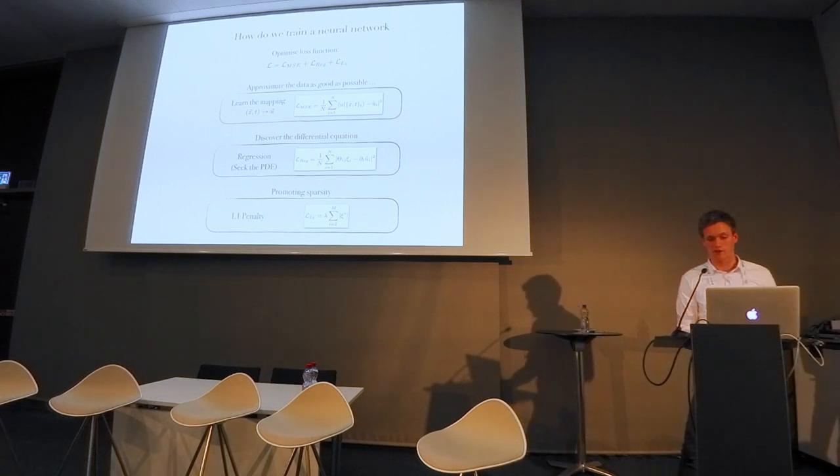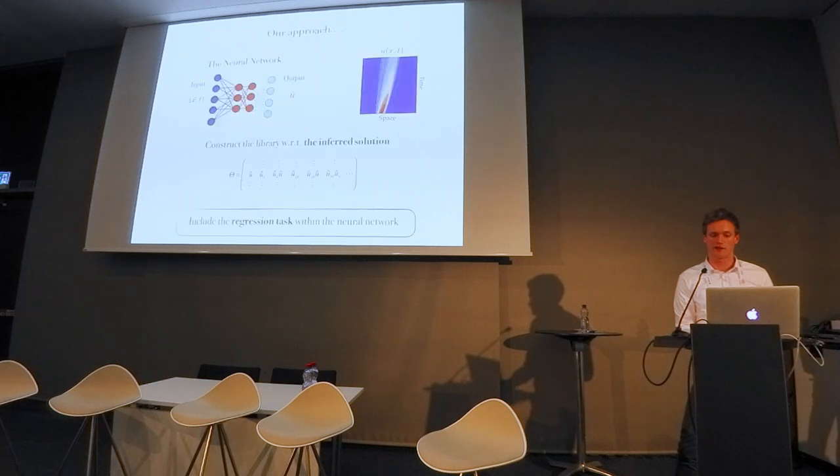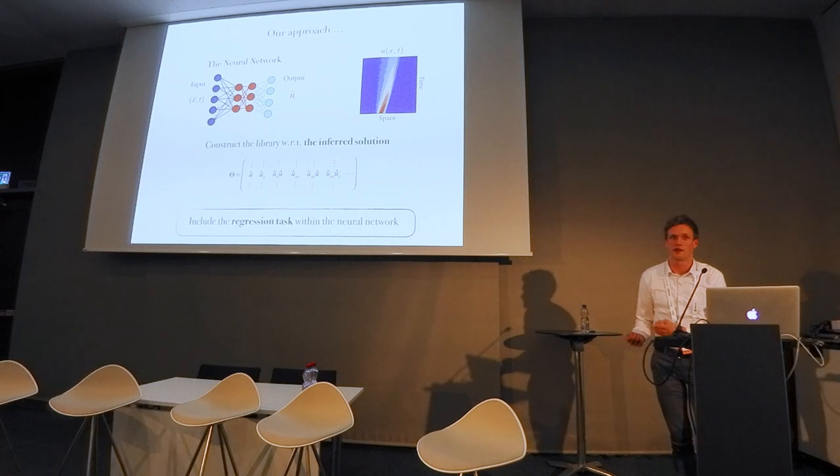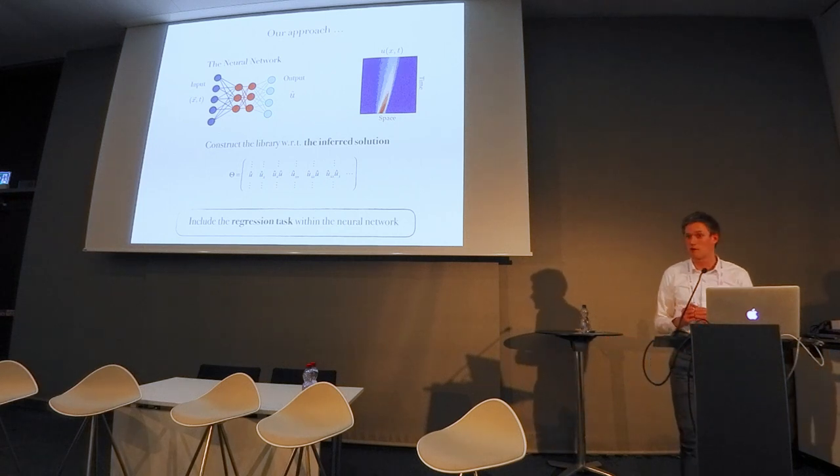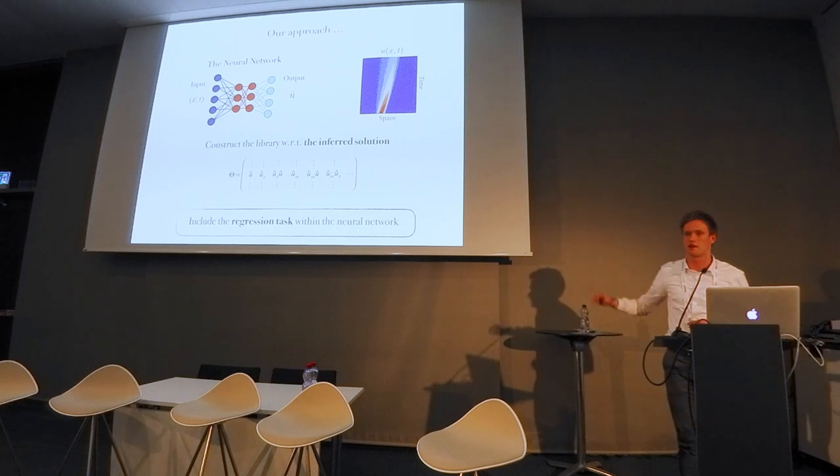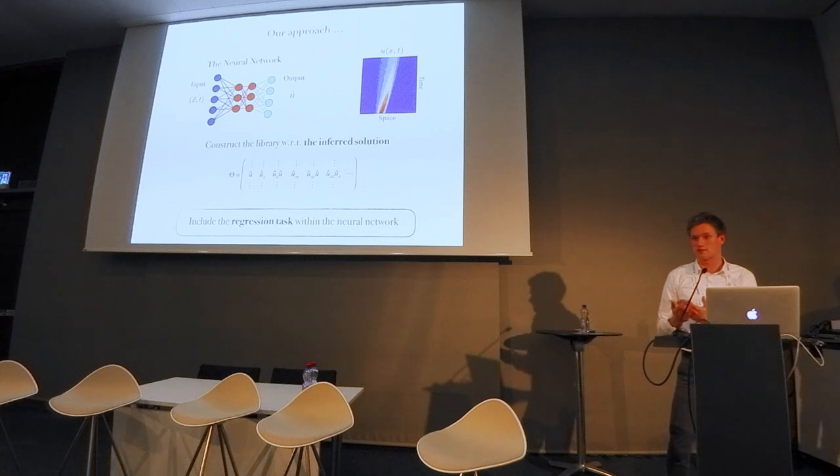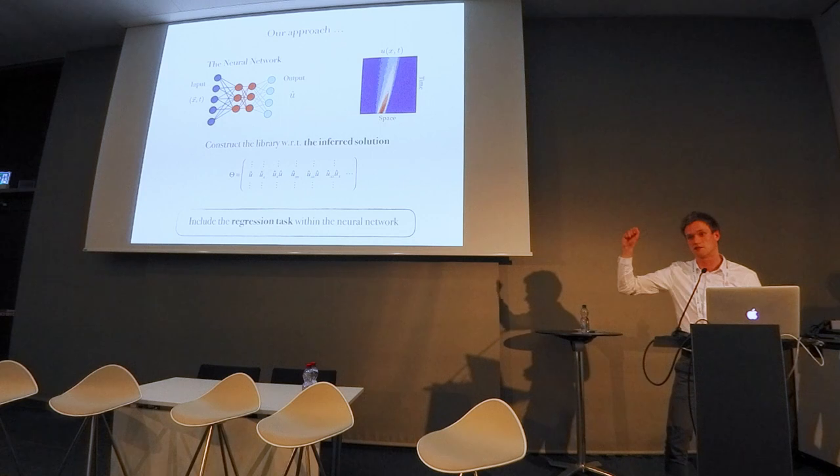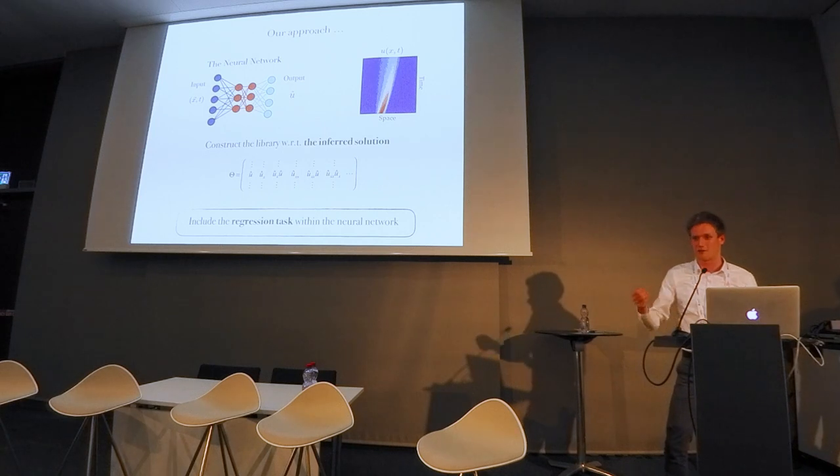That's a very good remark. In principle, our library theta is much bigger than the terms that feature in your equation, and it turns out you can choose this library very big. You can get tens of terms, even of the order of 50 different terms. Since we're optimizing for xi, it will find a sparse solution for xi, so it will tell you which of these terms feature in your equation, and the coefficients in front of these are the terms that are in your equation.